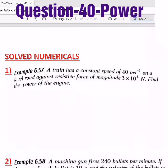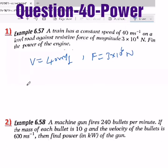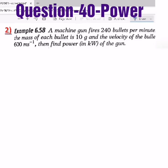The very first question is: a train has a constant speed of 40 m/s on a level road against a resistive force of 3×10⁴ N. Find the power of the engine. Due to resistive force, velocity keeps on decreasing, but to maintain the same velocity we need to apply some external force. So power due to that is Fv cos θ, but here θ will become zero degrees, so power will become F into v.